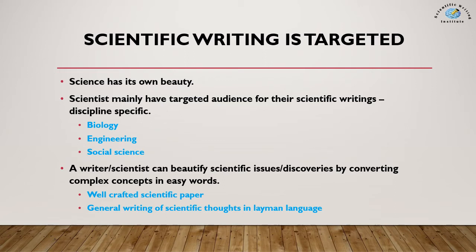Comparing scientific and literary writing, scientific writing is targeted writing. Science has its own beauty, and if you write that beauty in a better way you can tell the world what good things science is doing for their lives. Scientists generally have a targeted audience for their scientific writing, and these are discipline-specific like biology, engineering, and social sciences. Nowadays, interdisciplinary science has been making its way — like bioengineering, combining biology and engineering.